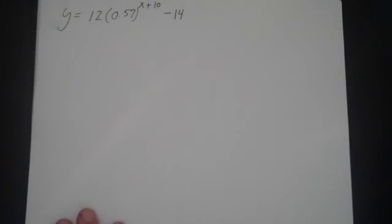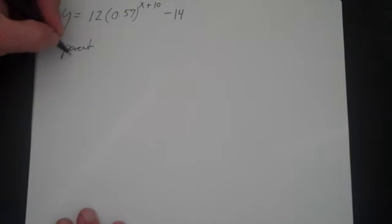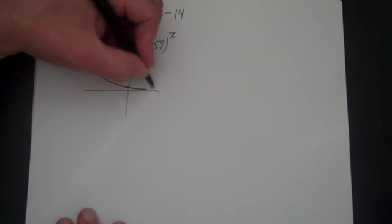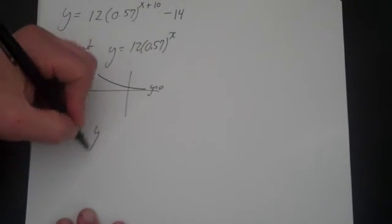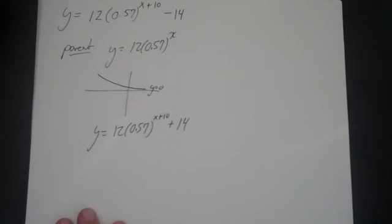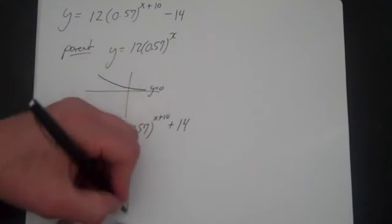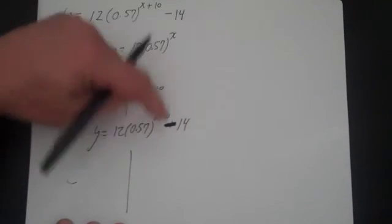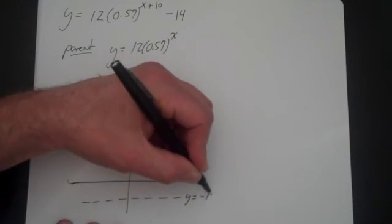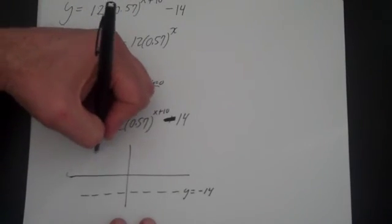Let's look at another problem: y equals 12 times 0.57 to the (x plus 10), minus 14. The parent function is y equals 12 times 0.57 to the x — that's a simple exponential decay function. It looks like this, with the asymptote starting at y equals zero. When we shift it, the 10 doesn't affect the asymptote, but the minus 14 does. So the new asymptote is minus 14.